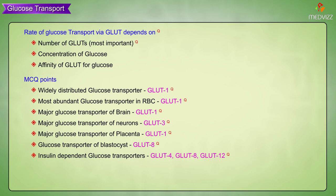Additional points: GLUT1 is not present in neurons. The urate transporter is GLUT9.